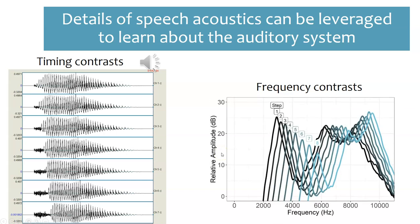Similarly, for frequency changes, we have a spectrogram cartoon showing the differences between 'sh' and 's' sounds. As the sound gradually changes up from 'sh' to 's', we can measure the exact acoustic change and see whether our auditory system can encode that change.